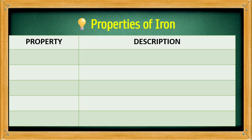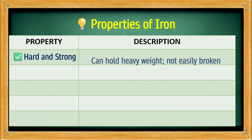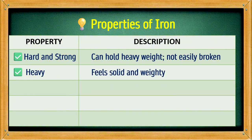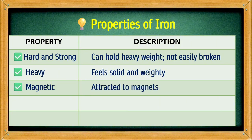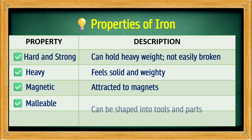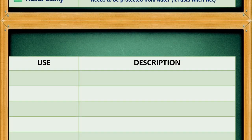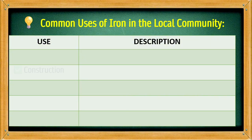Properties of iron: Hard and strong — can hold heavy weight, not easily broken. Heavy — feels solid and weighty. Magnetic — attracted to magnets. Malleable — can be shaped into tools and parts. Rust easily — needs to be protected from water.